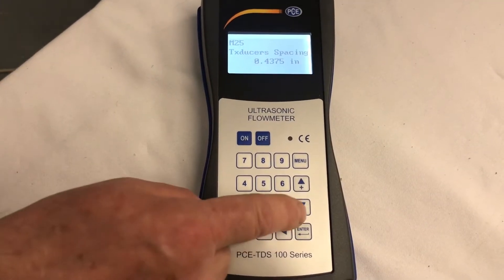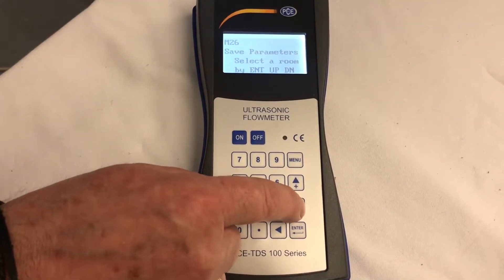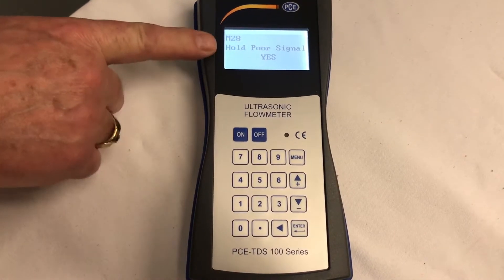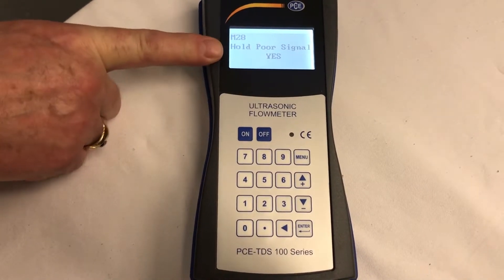Next, we're going to go to M28, which is for poor signal. We want to hold the poor signal. Always say yes.